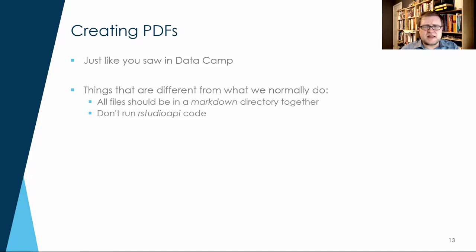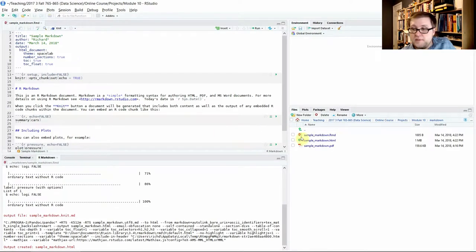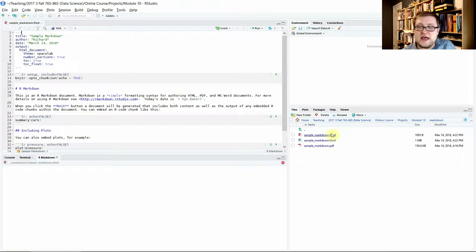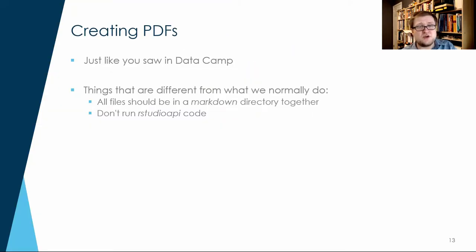For creating PDFs, I've already showed you how — it's just like you saw on DataCamp. The things that are different when converting your existing project to Markdown: one, move it over into the Markdown directory for the reasons I talked about earlier. As I can show you, several additional files have already been created — when you click Knit, temporary files are created in that directory too. All sorts of things are being generated and deleted in the Markdown directory all the time, so I recommend having your own dedicated directory. Also, you don't run RStudio API code inside Markdown files.